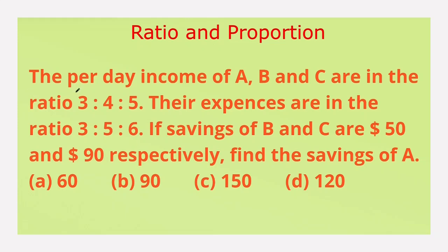The per day income of A, B and C are in the ratio 3:4:5. Their expenses are in the ratio 3:5:6. If savings of B and C are $50 and $90 respectively, find the savings of A.